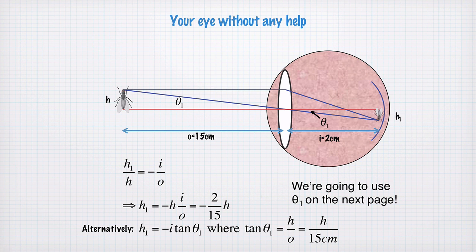So, here's your eye without any help. We have the object that we're trying to look at with some height h. This gives you some angle theta1, which is the maximum angle of light entering your eye. And we have a theta1 over on this side as well, because they're similar triangles. And we end up with an image here with height h1 on your retina. And we have the object and image lengths here. This is the distance in your eye, and this is the closest your lens and your eye can focus. So we have the ratio of h1 to h must be negative i on o. This just comes from similar triangles.